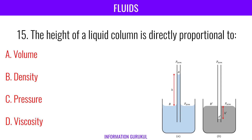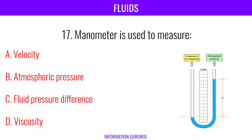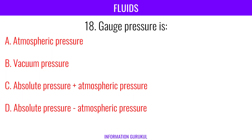The SI unit of density is kg per meter cube. The height of a liquid column is directly proportional to pressure. A barometer is used to measure atmospheric pressure. A manometer is used to measure fluid pressure difference.